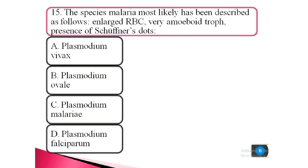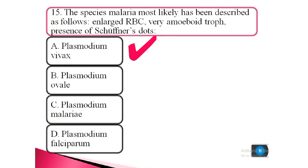Question 15. The species of malaria most likely described as follows: an enlarged red blood cell, very amoeboid trophozoite, presence of Schüffner's dots. a. Plasmodium vivax, b. Plasmodium ovale, c. Plasmodium malariae, d. Plasmodium falciparum. The answer is a. Plasmodium vivax.